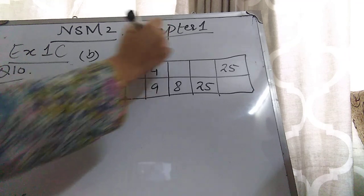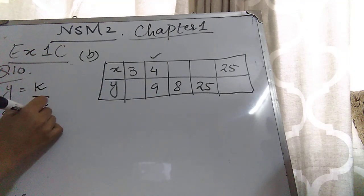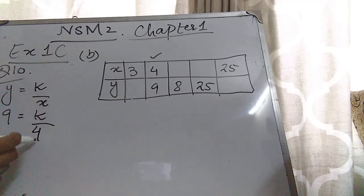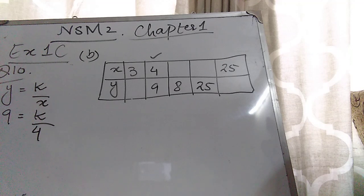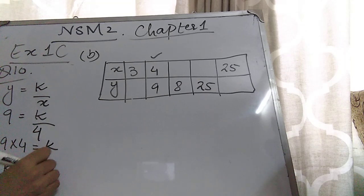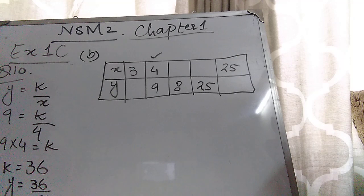Use these values to find k. Put y = 9 and x = 4 into y = k/x: so 9 = k/4. This 4 is dividing, when it goes to the other side it multiplies: k = 9 × 4 = 36. So the value of k is 36, and your main equation is y = 36/x.